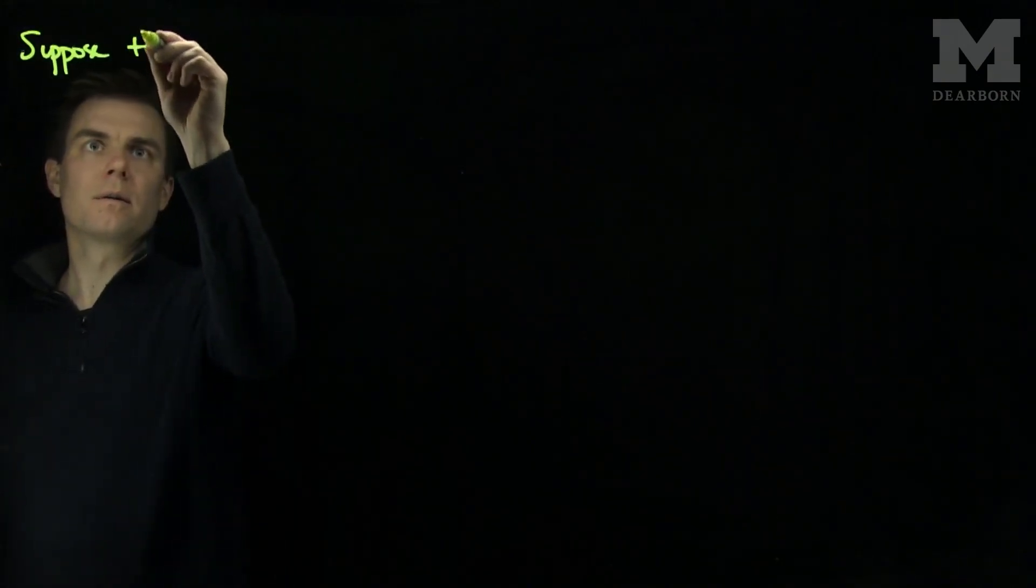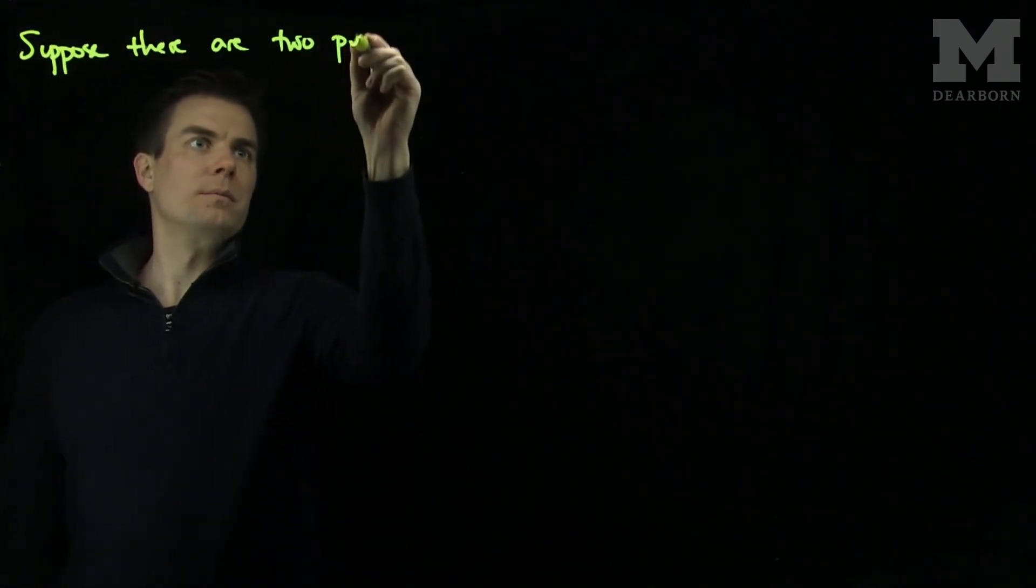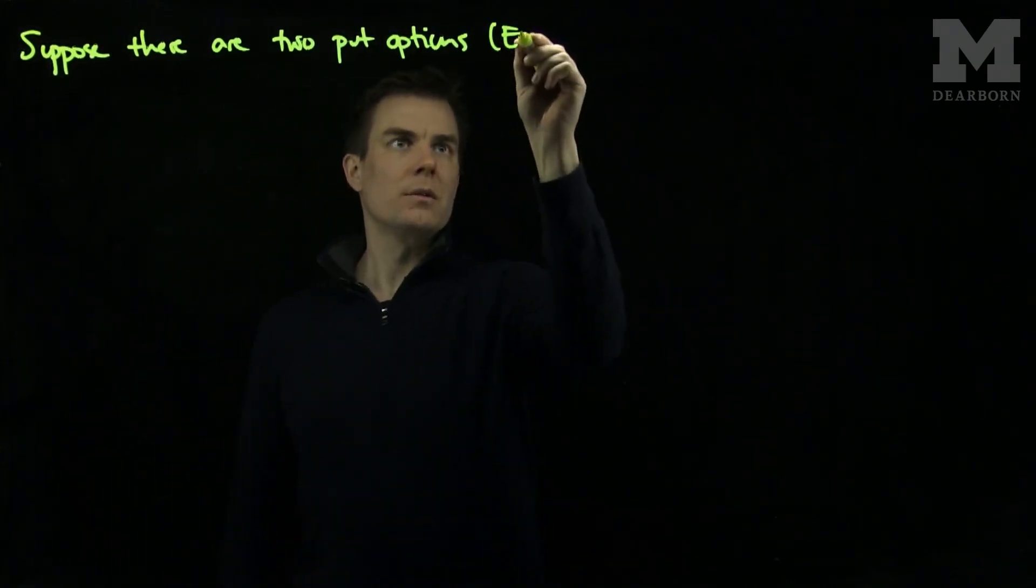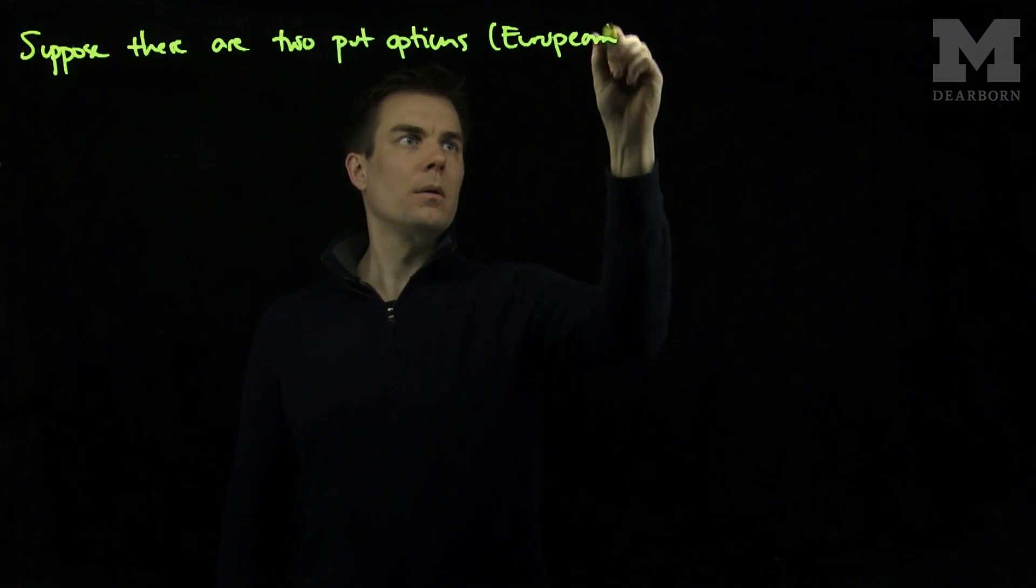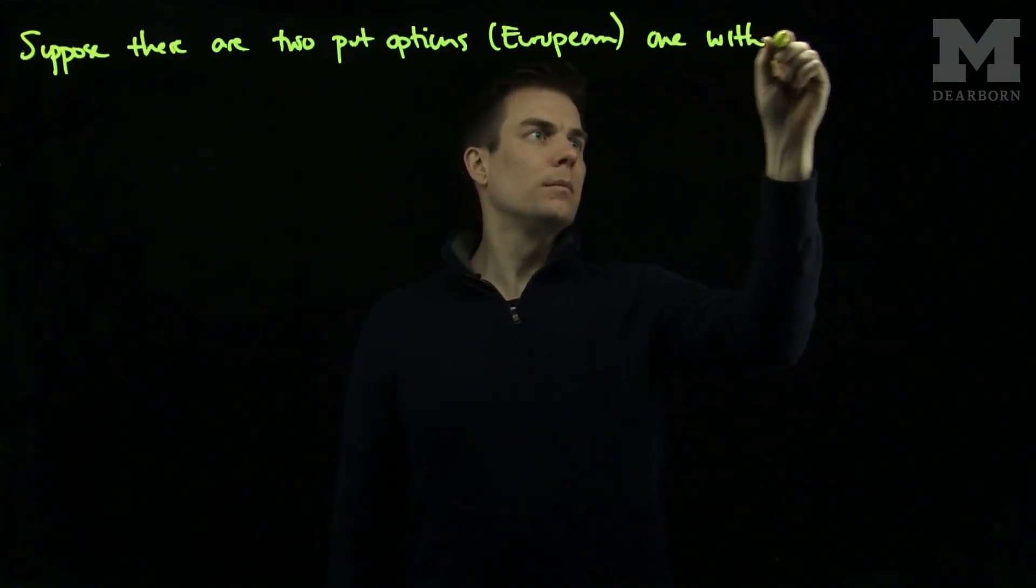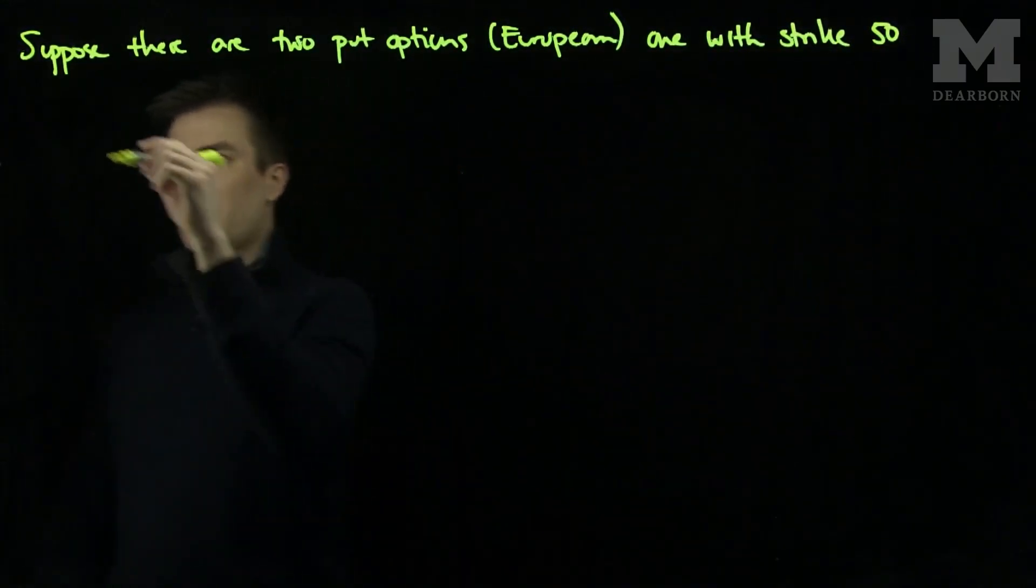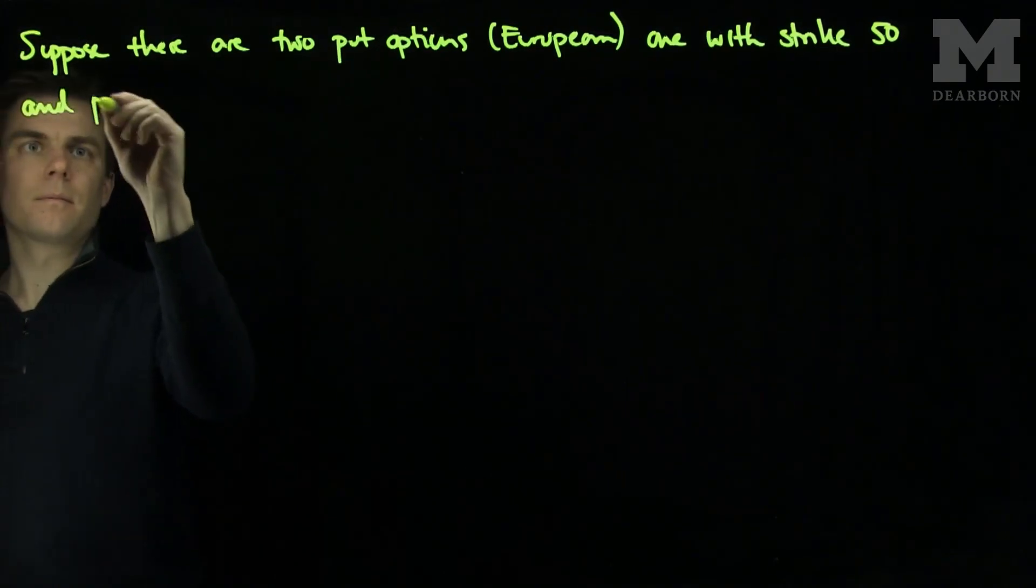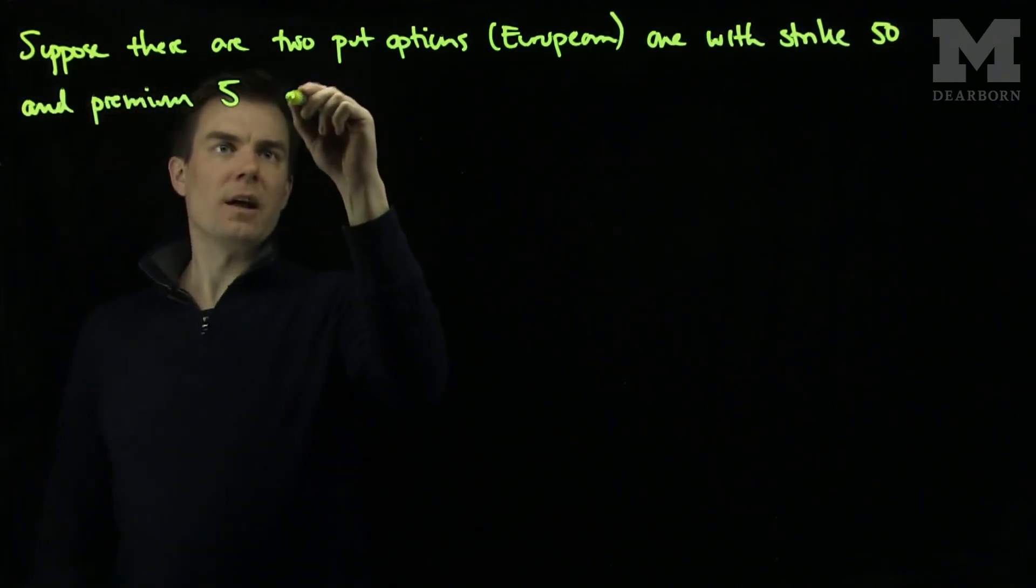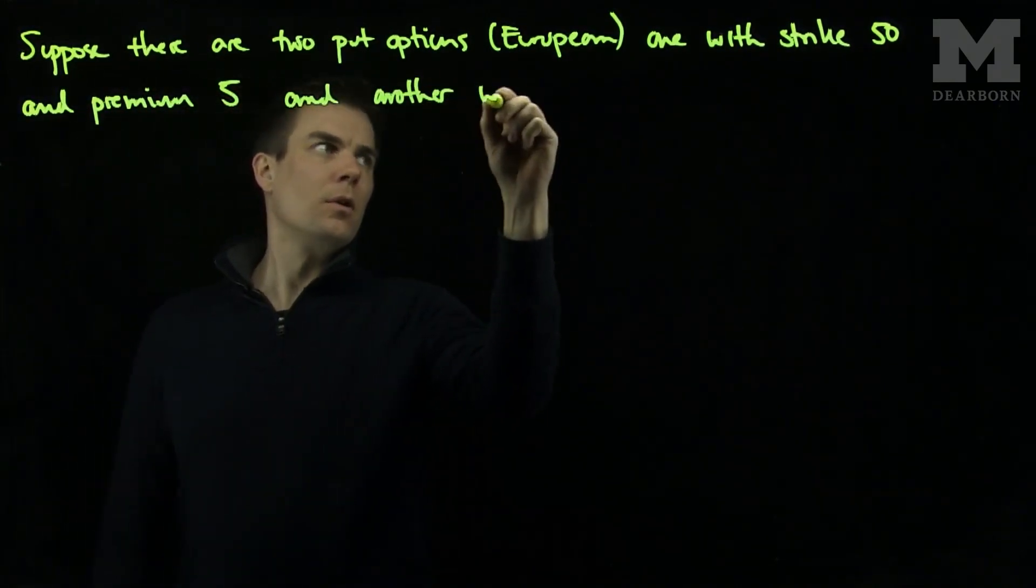Suppose there are two put options, and we'll assume these put options are European, one with strike fifty, and premium five, and another